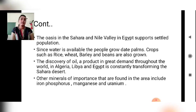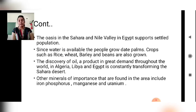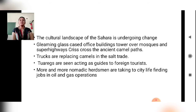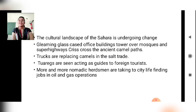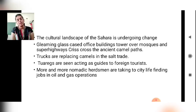Other minerals of importance found in the area include iron, phosphorus, manganese, and uranium, all used in different chemical industries. The cultural landscape of the Sahara is undergoing change — gleaming glass office buildings tower over mosques, and super highways crisscross the ancient camel paths. Trucks are now replacing camels in the salt trade.